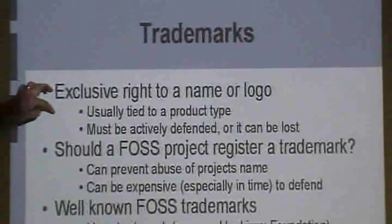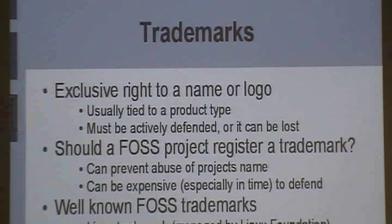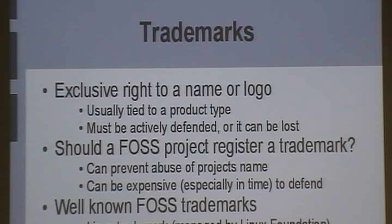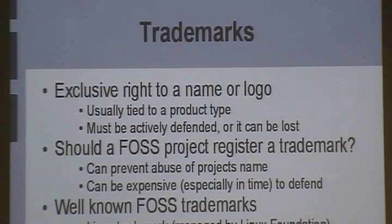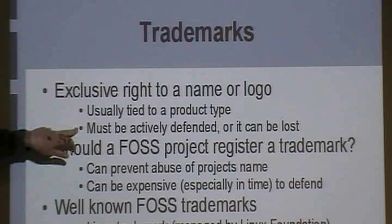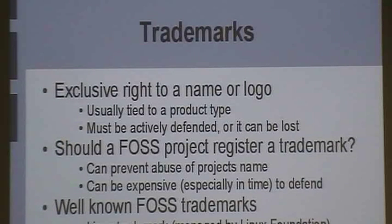Trademarks are an exclusive right to a name or logo, usually tied to a field of endeavour. For example, having a trademark on the word 'Samba' for software doesn't prevent people from dancing the Samba, because that's a different field. Trademarks are unusual among these areas of law because they must be actively defended or they can be lost. That's why you see companies sending cease and desist letters when someone casually uses their trademark generically — for example, calling any tissue a 'Kleenex.' Kleenex must actively defend their trademark and ensure it's only used for their product, otherwise it can be diluted and lost.